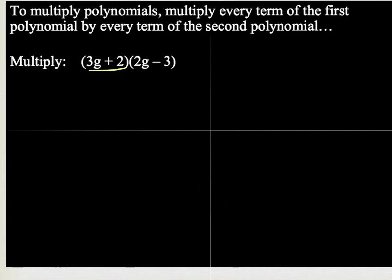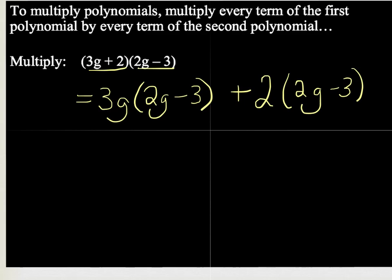So we have 3g plus 2 times 2g minus 3. So I will take 3g, and let me just write it out in full. I will multiply 3g times 2g minus 3, and I will multiply 2 times 2g minus 3. This is a long way of writing it out, but I think it gets to the point. I'm going to take 3g from the first expression and multiply it by 2g minus 3, and then take the second term, 2, and multiply it by every term of the second polynomial. Let's see what that gives me.